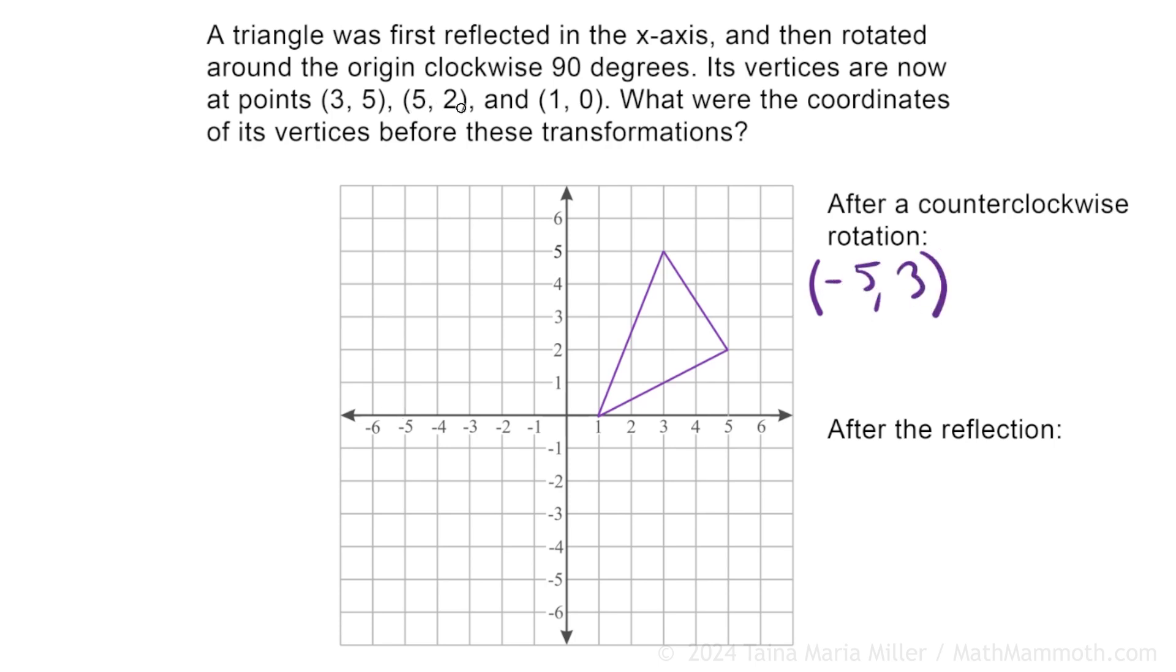Then this 5, 2, it also flips to 2 and 5. But the x-coordinates are negative. So negative 2 and 5. And then the last one, the same thing, 0, 1. And now, reflection. It's somewhere here. It is reflected over there.